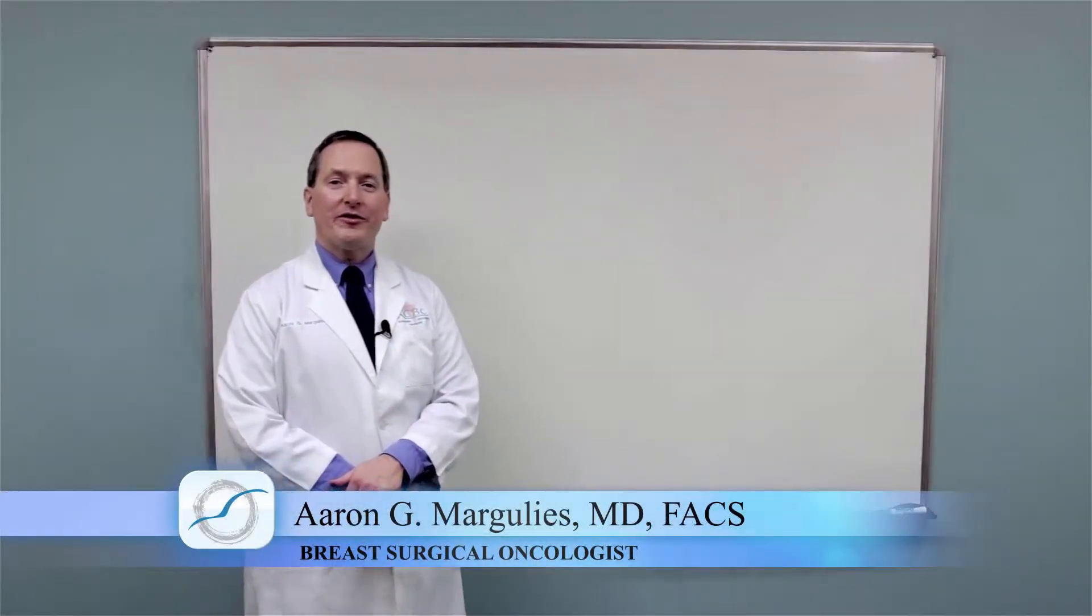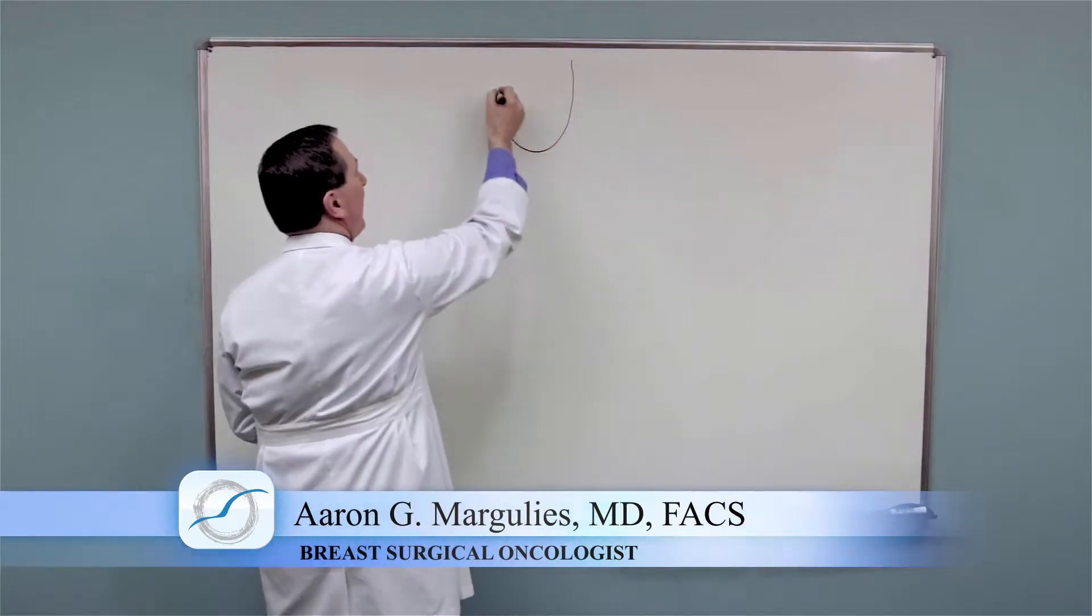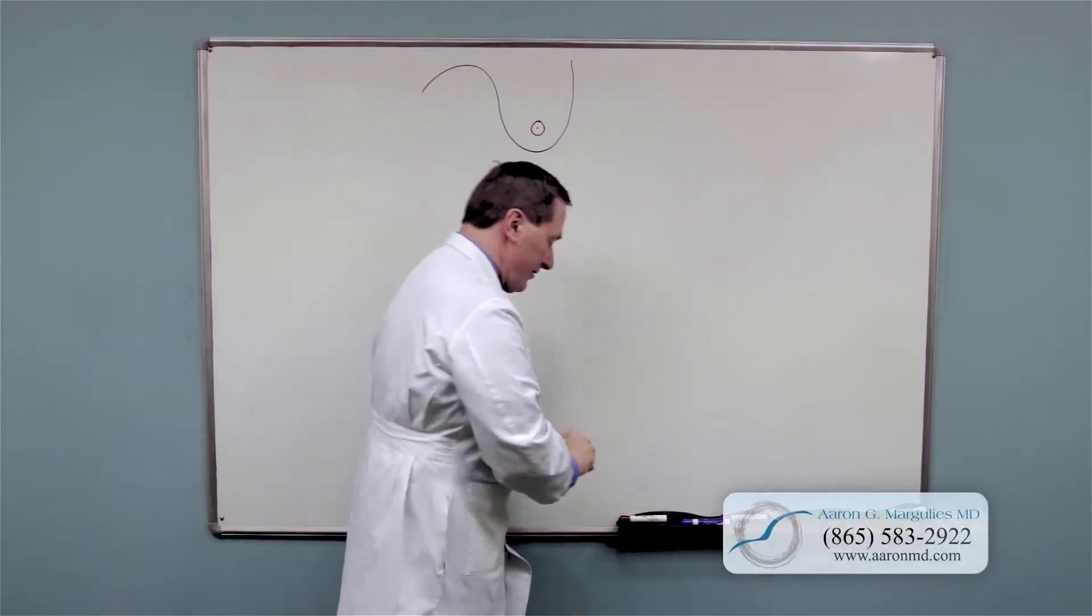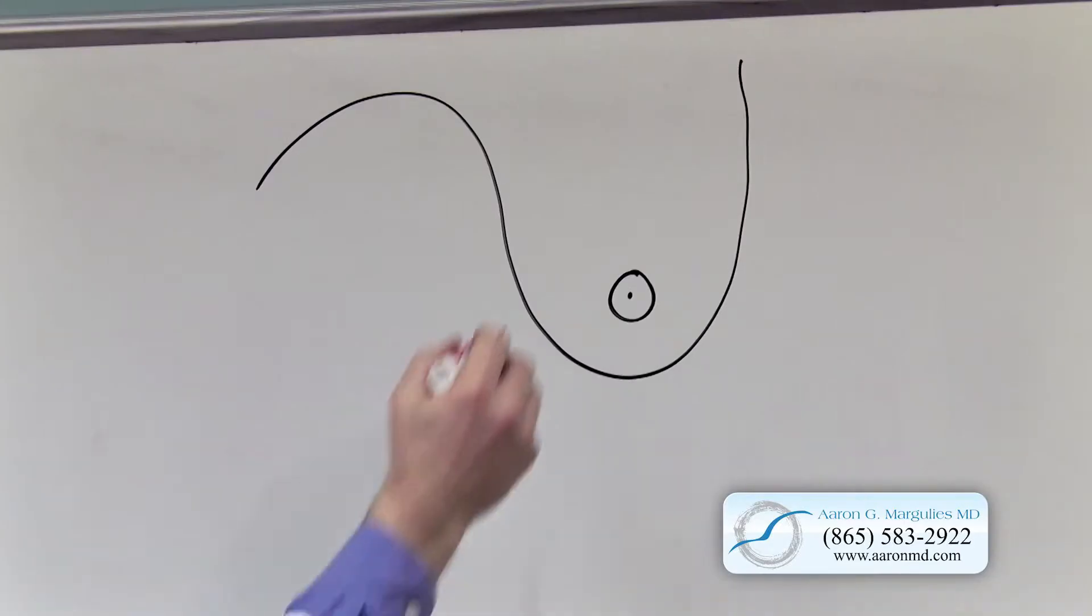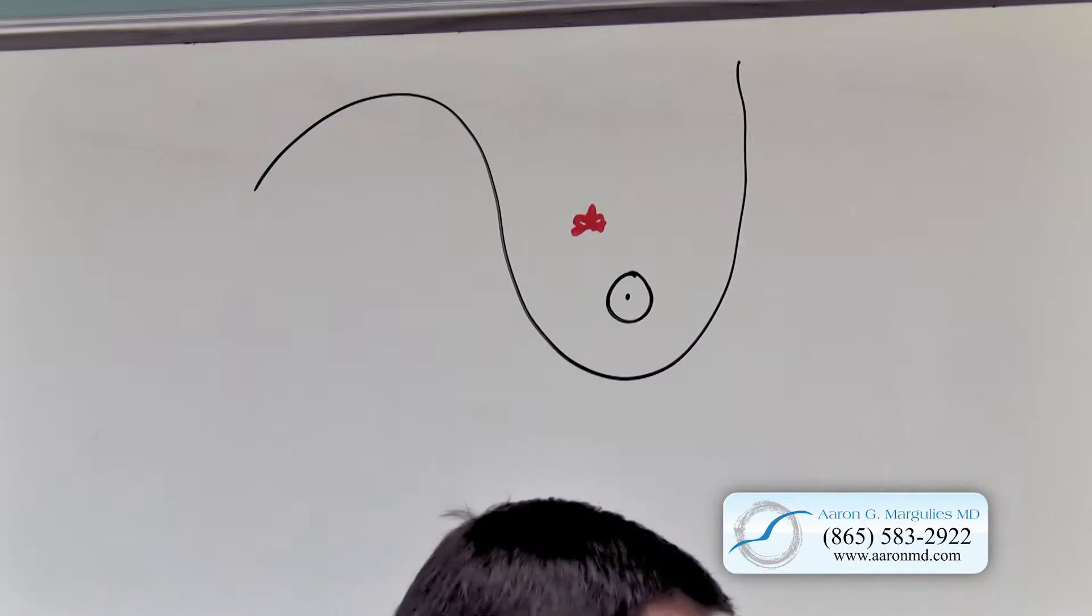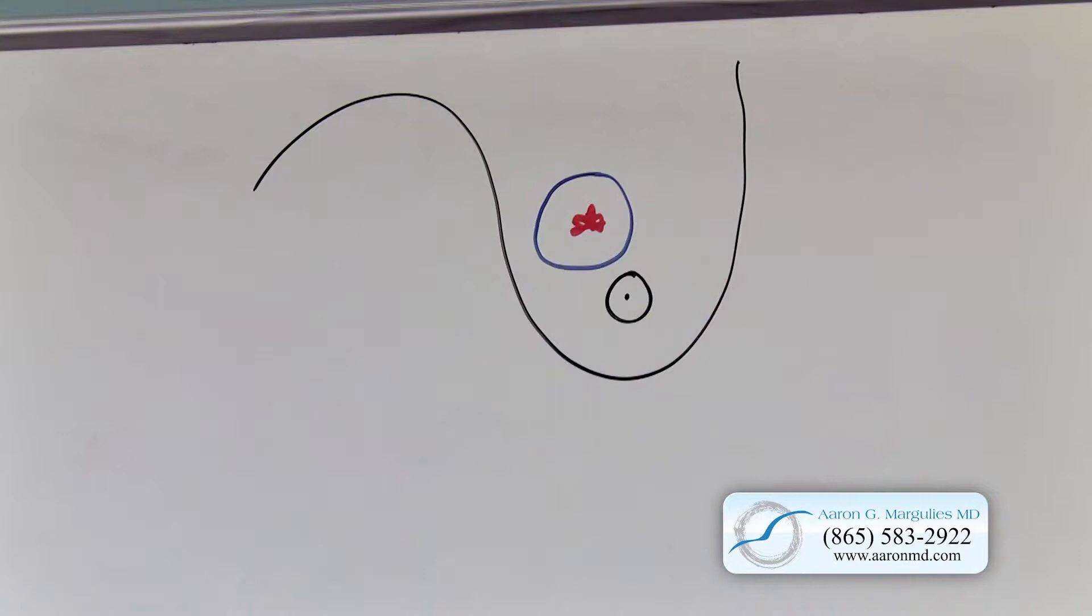Let's talk about the surgical treatment of breast cancer. We have two options, two ways to treat breast cancer. So here's your breast cancer. The first treatment is to cut out your cancer with a rim of healthy tissue around it, and that's what we call a lumpectomy.